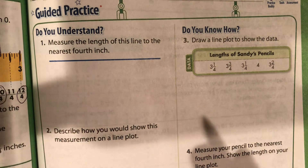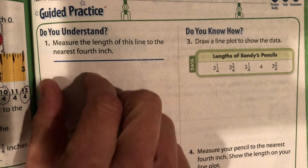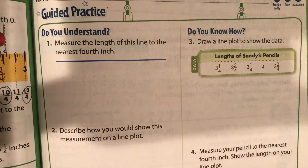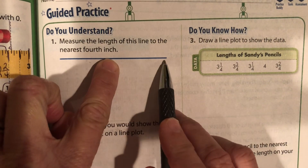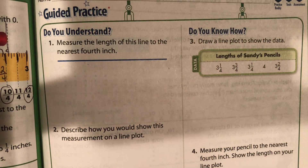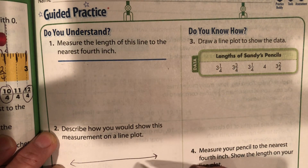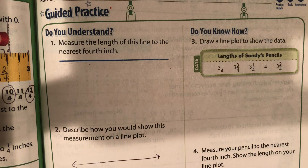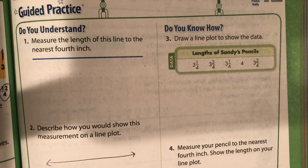Let's look at the guided practice. I don't have a ruler, so I can't precisely measure this. It looks like it's a little bit less than three inches to me — maybe a little more — somewhere between three and four inches. On a line plot, however long it is, we would draw our line and put the dot at that measurement. Sorry that's not very helpful without a ruler, but there's not much we can do.